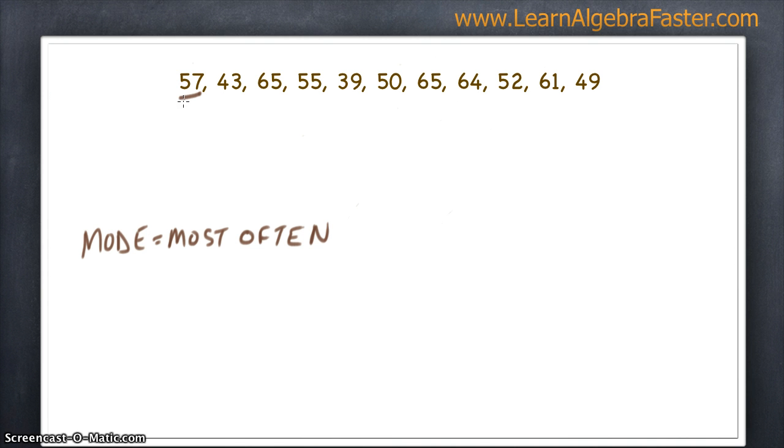But remember, this is still technically the mode. Right now, we don't know if we even have a mode yet. So 57 happens once. We'll see if we can find a number that happens 2, 3, 4, or more times. 43 does not happen anywhere in the set. So right now, we don't have anything to go on.